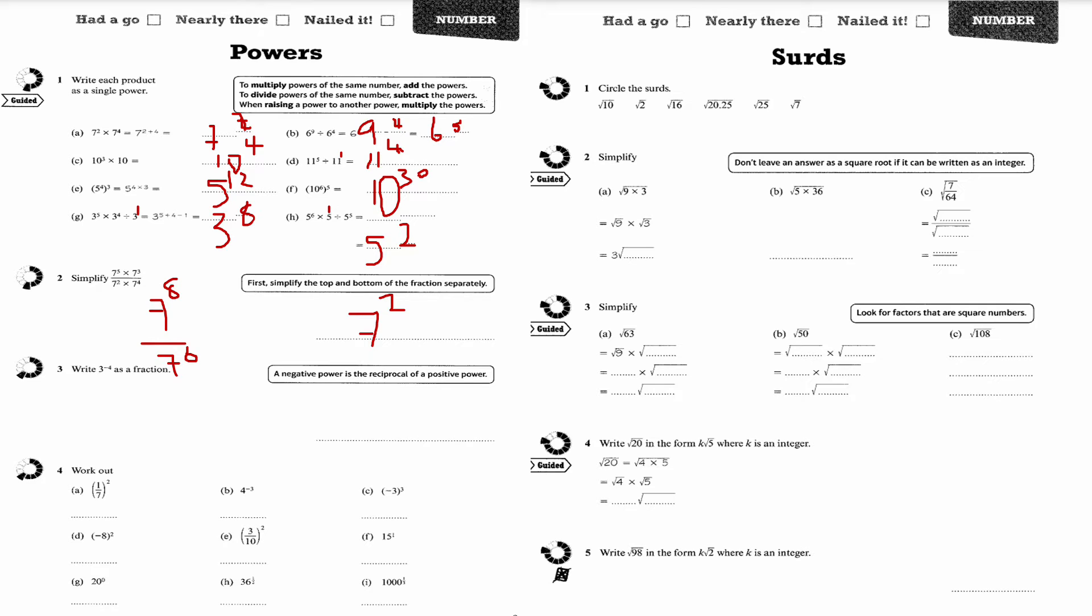This is question number 3. 3 to the minus 4 is a fraction. That minus flips the reciprocal, so it's 1 over 3 to the power of 4. Now 3 to the power of 4 means 3 times 3 times 3 times 3, which is 1 over 81. When you have a negative power, it's what we call the reciprocal, the inverse of it. Imagine I've got 3 over 1 and I flip that, I get 1 third.